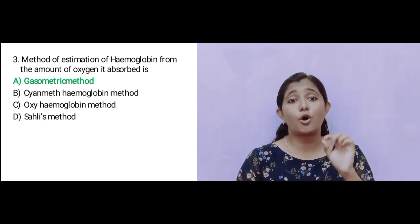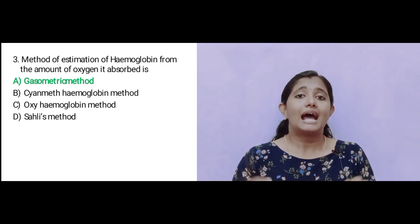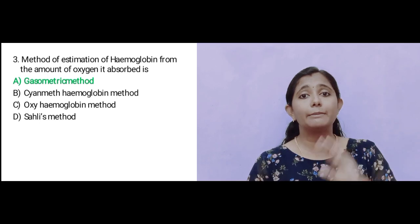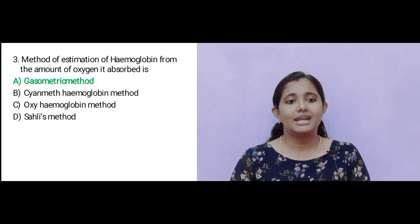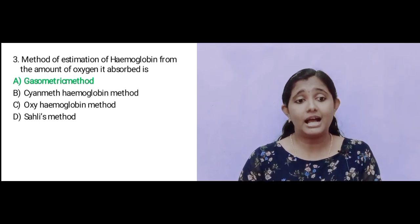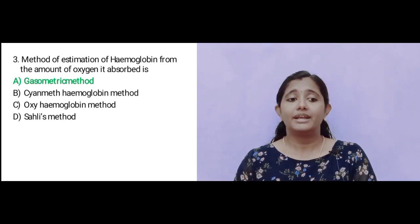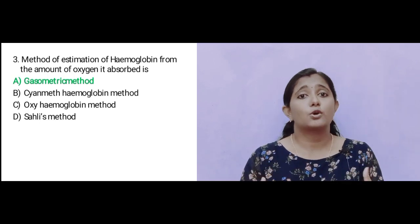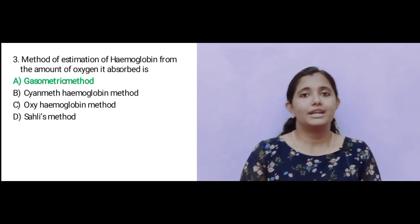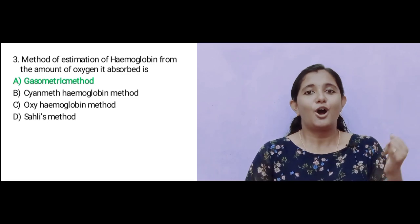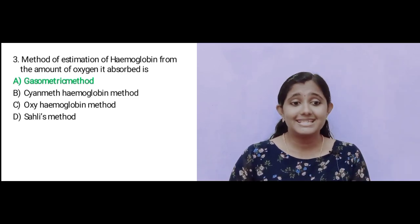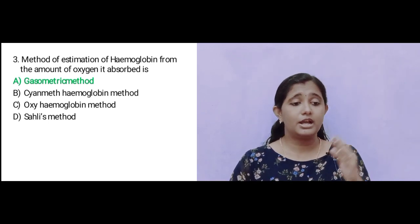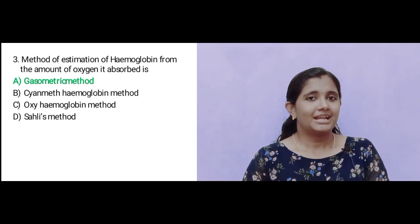Question number 3: Method of estimation of hemoglobin from the amount of oxygen it absorbed. The answer is the gasometric method.